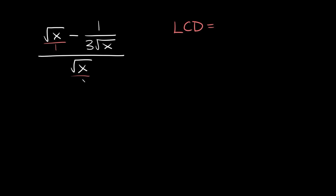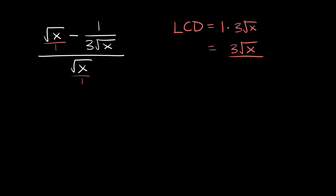We can make that last term a fraction by putting it over 1. Now to find the LCD, we multiply all our different denominators together. We have a 1 times 3 times the square root of x. The denominator of the last term is also 1, and we already have a 1, so we don't need to include it again. Anything times 1 is just itself, so the LCD is simply 3 times the square root of x.